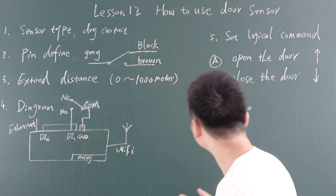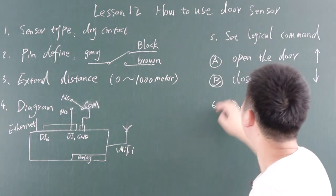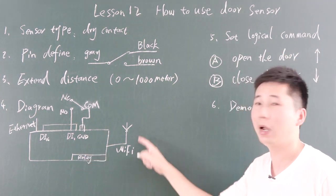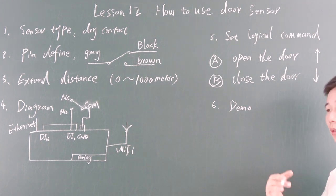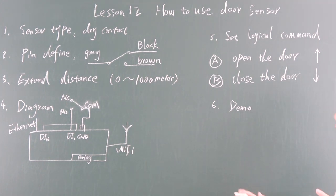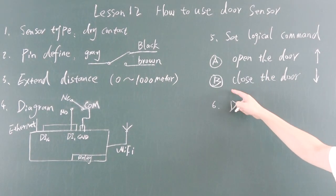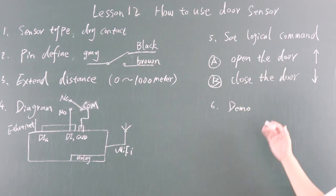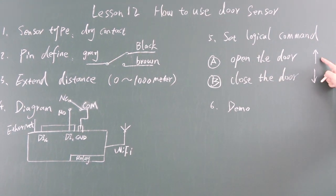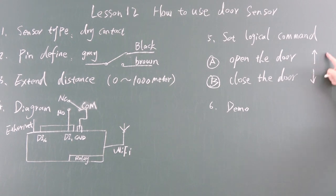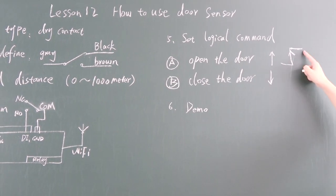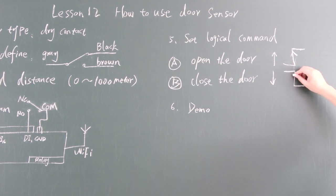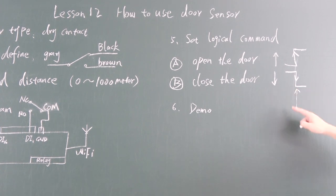It's just on and off. After wiring the sensor to the controller, we need to set the logic command in the PC software so that the door sensor has a relationship for automatic control. There are two options — option A and option B — which are open the door and close the door. For open the door, we set the command so the level becomes high. For close the door, the level becomes low. This detects the signal: level going from low to high, and level going from high to low — detected at that point in time.